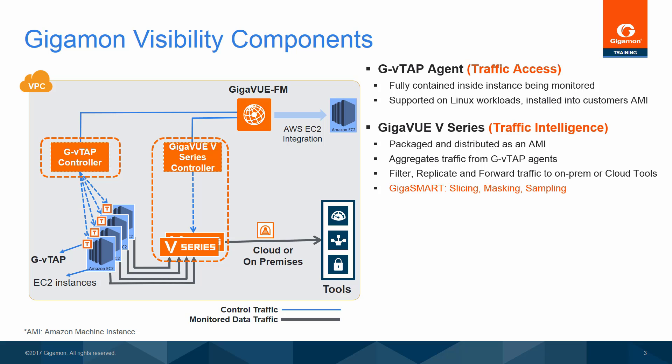The GigaVUE V-Series Visibility Nodes are available as an AMI that aggregates traffic from multiple agents. They can filter, replicate, and forward traffic to tools on enterprise premises or tools in the public cloud. Most importantly, the GigaVUE V-Series Nodes support GigaSmart by allowing sampling, masking, or slicing traffic before reaching the tools.